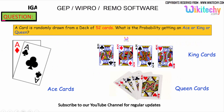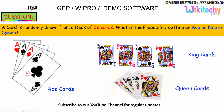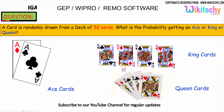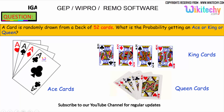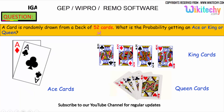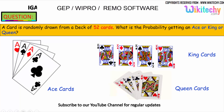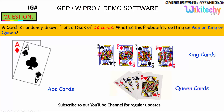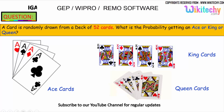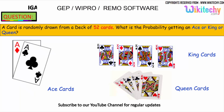Let's move on to the next problem. A card is randomly drawn from a deck of 52 cards. What is the probability of getting an ace or a king or a queen? That's the question — probability of getting a king, queen, or ace.